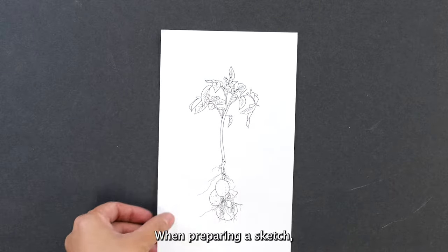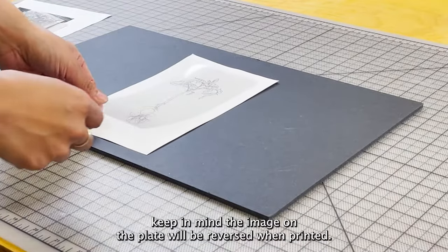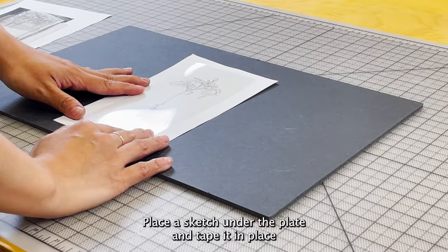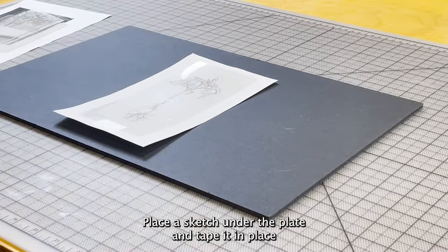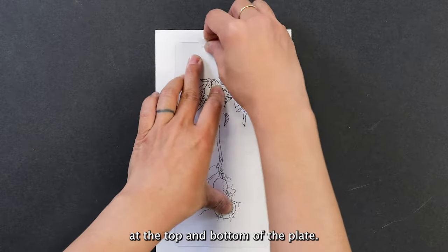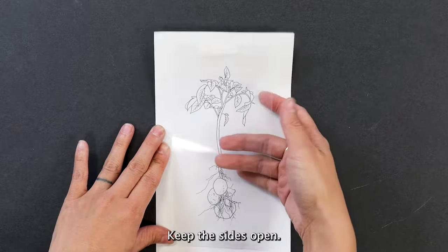When preparing a sketch, keep in mind that the image on the plate will be reversed when printed. Place the sketch under the plate and tape it in place on the top and bottom of the plate. Keep the sides open.